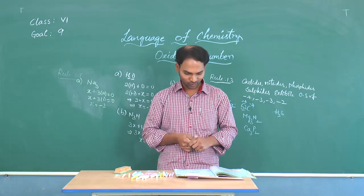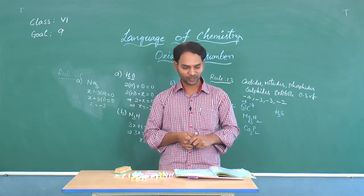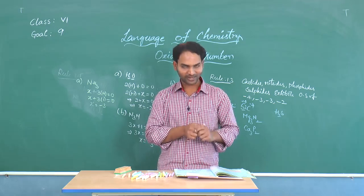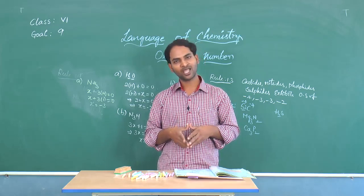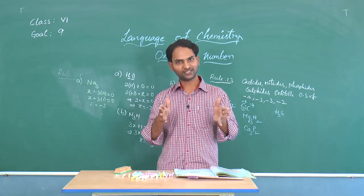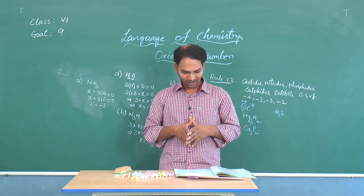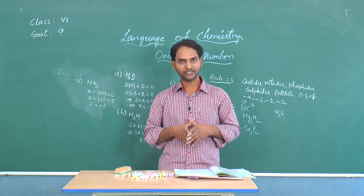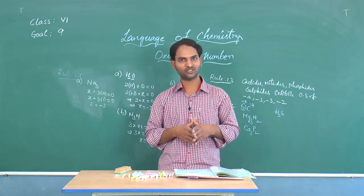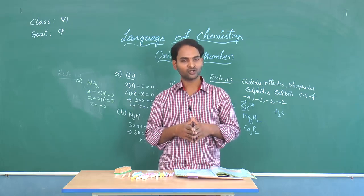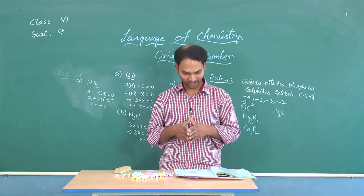For the assertion-reason question: the assertion states that in all compounds, the oxidation number of group 1A elements is +1 except hydrogen — this is a correct statement, because 1A group elements exhibit +1 oxidation state, which is why they are placed in group 1A of the periodic table. The reason states that 1A group elements are highly electronegative — this is wrong, because they are highly electropositive and metallic. Assertion is correct but reason is wrong, so the answer is option C.